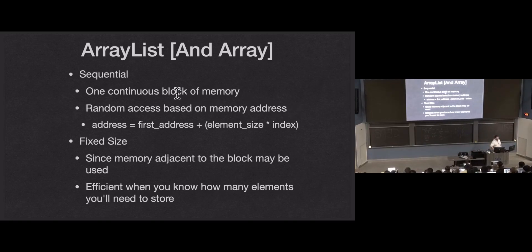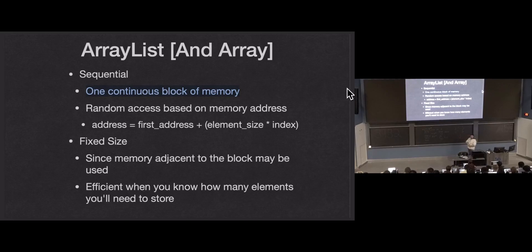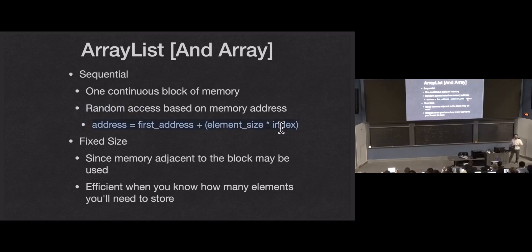Arrays work off of one continuous block of memory. When we create an array, we ask for a chunk of memory, and then that's where all the values are stored — right next to each other in memory. We say an array is random access because we have a way of accessing any element in the array very quickly and very efficiently. There's no actual randomness involved, but we can access any element very efficiently.